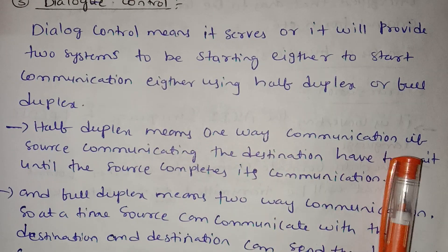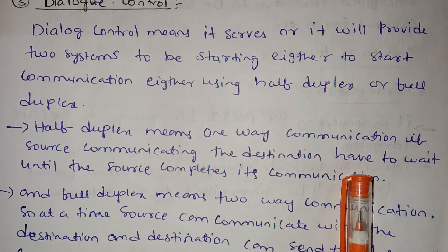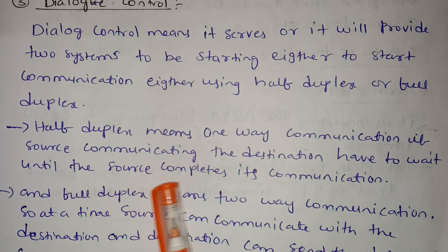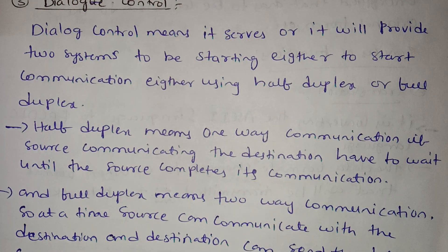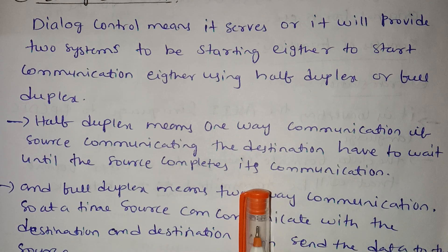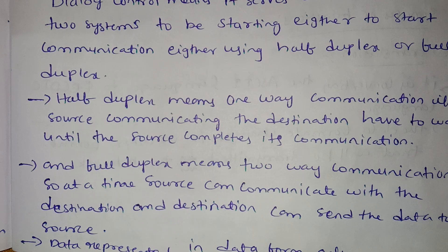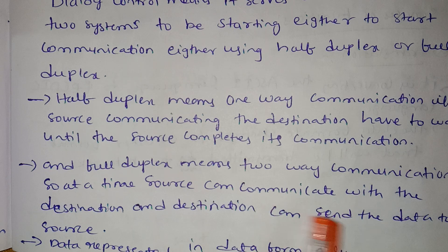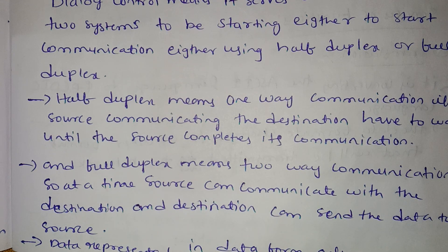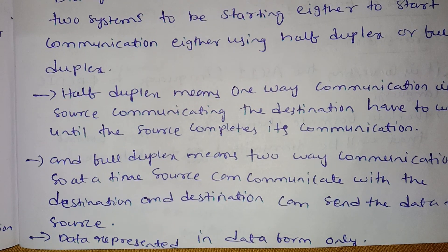Half duplex means one-way communication. The source communicates to the destination; the destination has to wait until the source completes its communication. Full duplex means two-way communication — both A and B can send data at the same time.